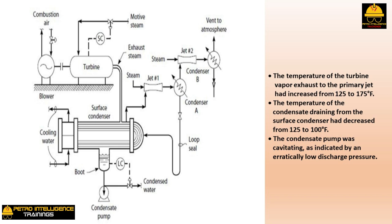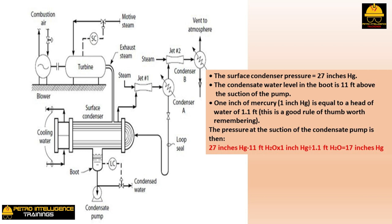Condensate pumps serving surface condensers have a common problem: their suction is under vacuum. For example, with the surface condenser pressure at 27 inches mercury and a condensate water level in the boot 11 feet above the pump suction — using the rule of thumb that 1 inch mercury equals 1.1 feet of water head — the pressure at the suction of the condensate pump is 27 inches mercury minus (11 feet ÷ 1.1) = 17 inches mercury. If the seal of a centrifugal pump leaks under vacuum, air will be drawn in and the pump's capacity will be severely reduced.